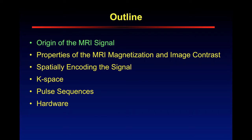Let's talk about the outline. We're going to break this down and talk about the origin of the magnetic resonance imaging signal, the properties of the MRI magnetization and image contrast, spatially encoding the signal, k-space, pulse sequences, and hardware. This will be the MRI portion of this talk, and then we'll talk about CT, or computed tomography.